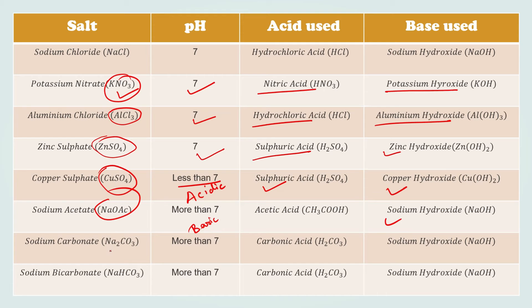Sodium carbonate (Na2CO3) is formed from carbonic acid (H2CO3) and sodium hydroxide; its pH is more than 7, so it is basic in nature. Sodium bicarbonate (NaHCO3) is also formed from carbonic acid and sodium hydroxide, and its pH is more than 7 — it is also basic.